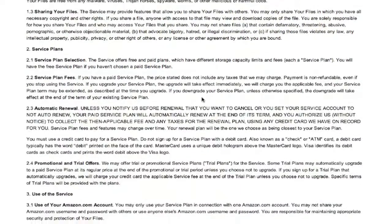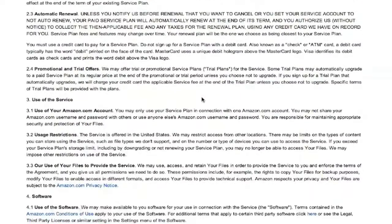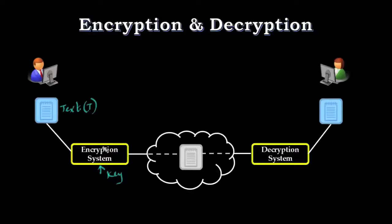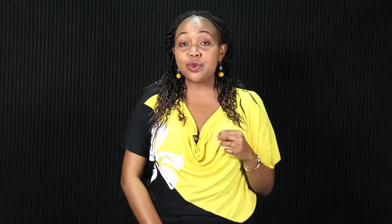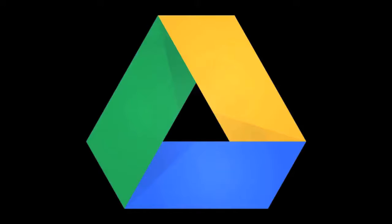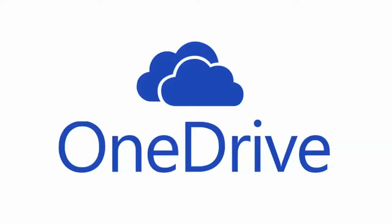To secure data, most companies use a combination of techniques which include encryption. Encryption uses a complex algorithm to encode information. To decode the encryption files, a user needs an encryption key. While it's possible to crack encrypted information, most hackers do not have access to the amount of computer processing power they would need to decrypt information. To stay safe, stick to reputable names — there are over 100 companies that are offering this service.